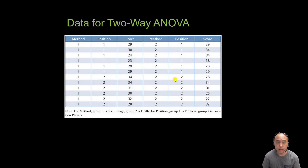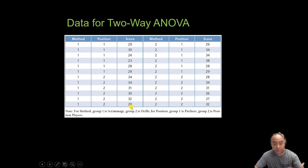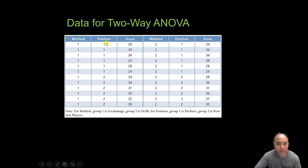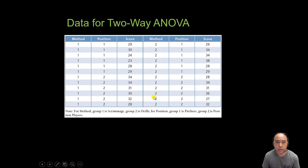Here is the sample data. The higher the score, the better the fielding coverage for that player. Position code 1 represents pitchers, code 2 represents position players. For instructional method, code 1 is scrimmage and code 2 represents drills. We're going to enter all this data into RStudio and then run our analysis.